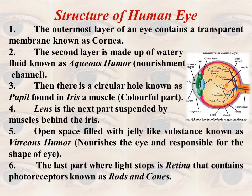The outermost layer of the eye is the cornea, which is transparent. The second layer is made up of watery fluid called the aqueous humor. The aqueous humor has two important functions: it nourishes the eye, and it gives shape to the eye. Because it is a watery fluid, it maintains the required shape — just like air in a balloon gives shape. If you remove the aqueous humor, the eye's shape will be diminished.